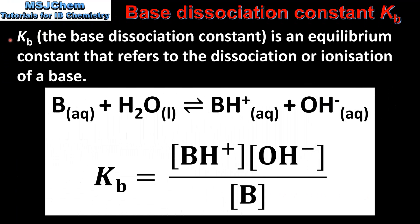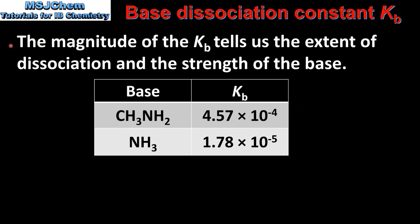Next we look at Kb, the base dissociation constant. Kb is an equilibrium constant that refers to the dissociation or ionization of a base. For a weak base B, the products are the hydroxide ion and the conjugate acid of the weak base. In the Kb expression, the numerator contains the concentration of the conjugate acid and the concentration of the hydroxide ion, while the denominator contains the concentration of the weak base. Once again, water is not included in the expression. The magnitude of the Kb tells us the extent of dissociation and the strength of the base.